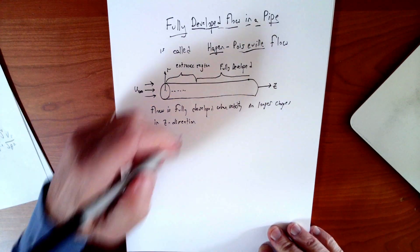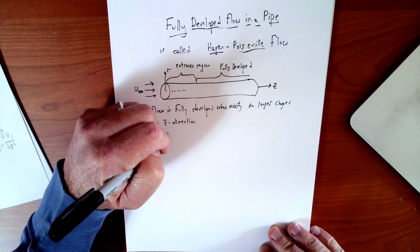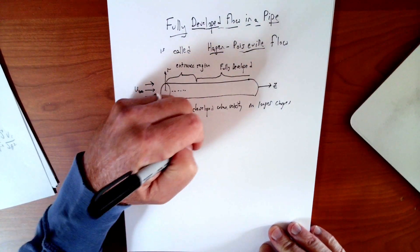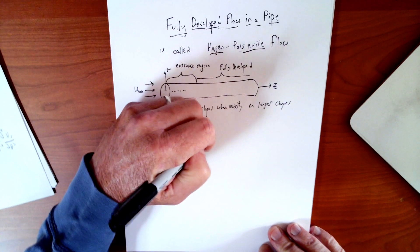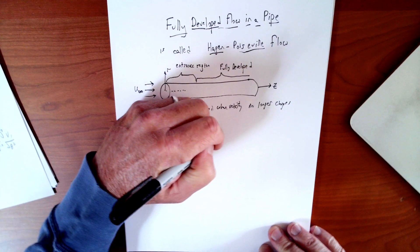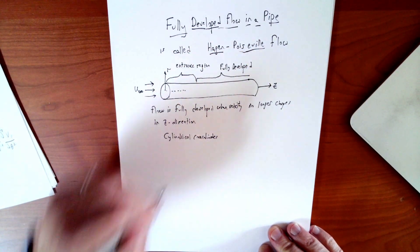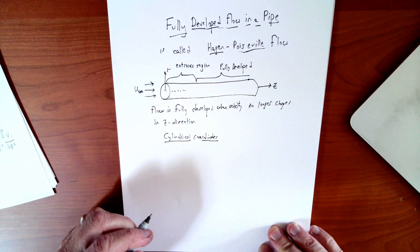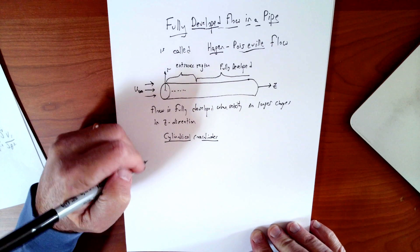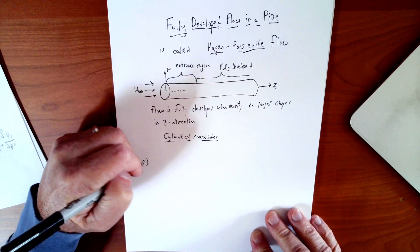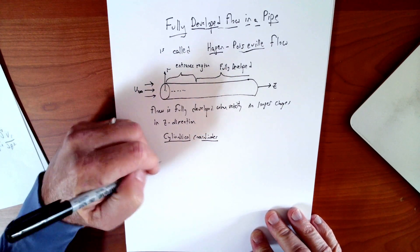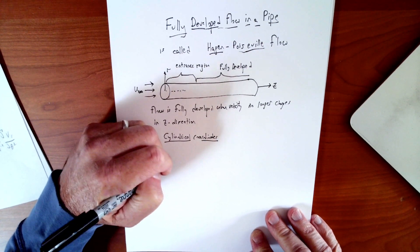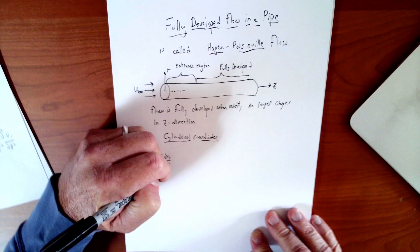So I will show you the Navier-Stokes equations in cylindrical coordinates. You will get to see them this one time. We will not really be using cylindrical coordinates for our Navier-Stokes equations except in this particular problem, which of course is extremely well suited to it. And as we know and anticipate, it's going to simplify quite a bit in the fully developed regime, just as it did in the flow between plates.